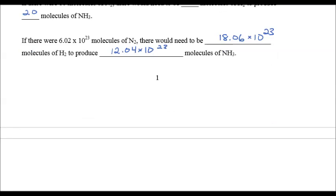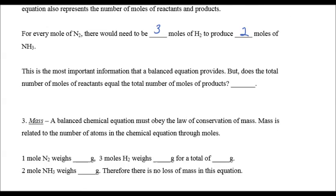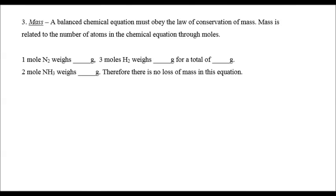So that leads us to our third important concept, mass. A balanced chemical equation must obey the law of conservation of mass. Mass is related to the number of atoms in the equation through moles. So one mole of N2, we should look it up. N is 14. So N2 will weigh 28 grams. Reacts with 3 moles of H2. H weighs 1. So H2 weighs 2. So 3 moles weighs 6. For a total of 34 grams of reactants.